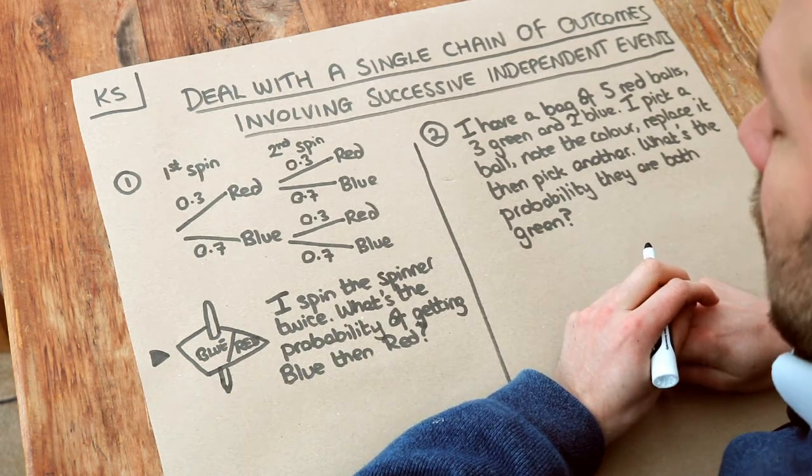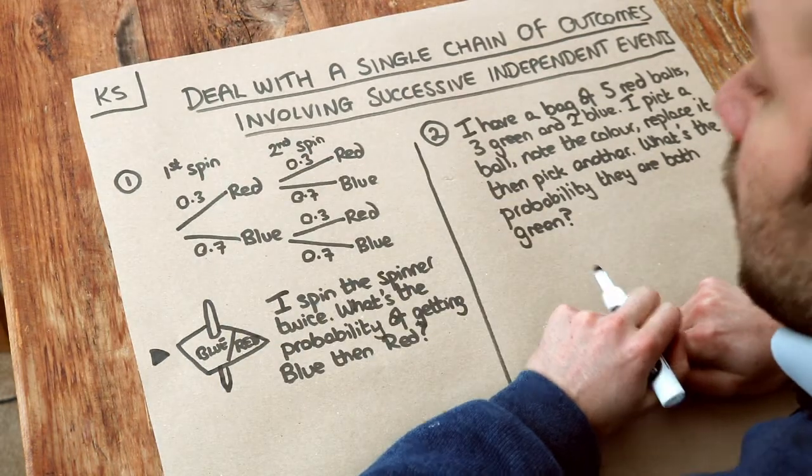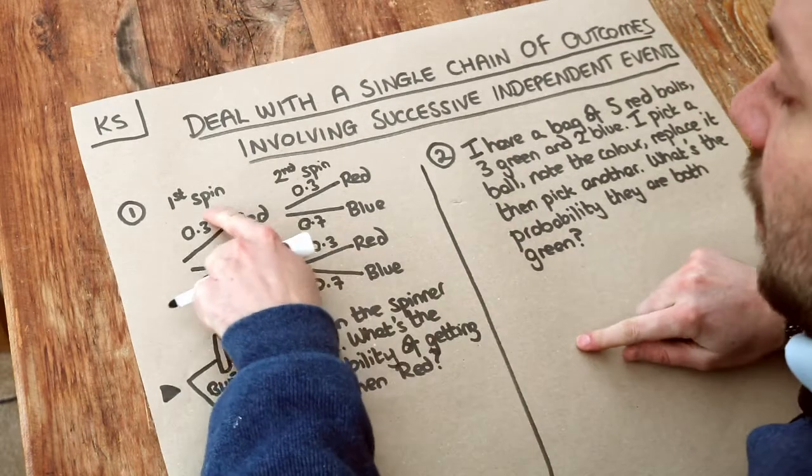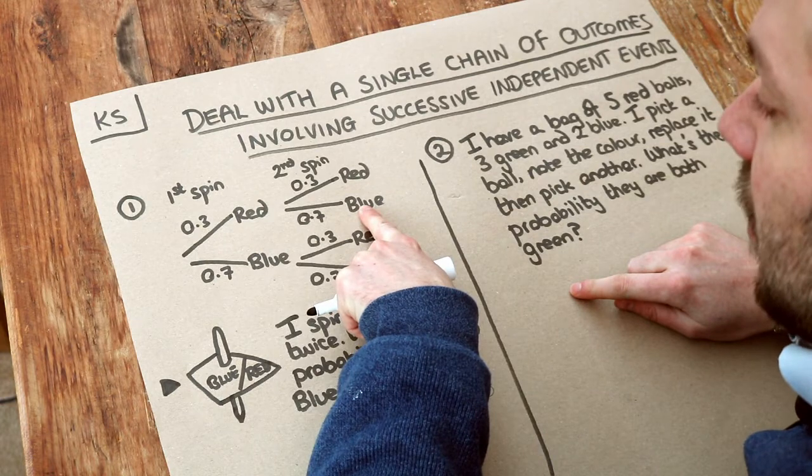In the previous video we saw how we could form a probability tree from a sequence of events. So for example in this tree, this means for our first spin of a spinner, we got red on the first spin followed by blue on the second spin.